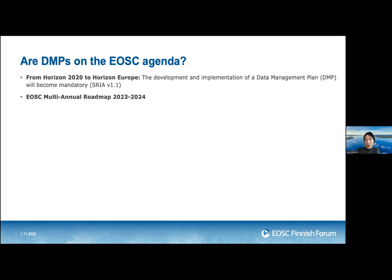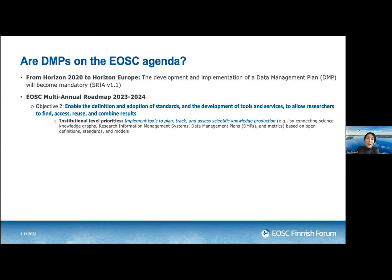What are the priorities related to data management plans in EOSC? We are working on a multi-annual roadmap detailing priorities for the next years. For 2023–24, there are gaps and priorities identified in relation to DMPs. The first priority at institutional level relates to EOSC objective two on enabling standards adoption: implementing tools to plan, track, and assess scientific knowledge production, including DMPs based on open definitions, standards, and models.